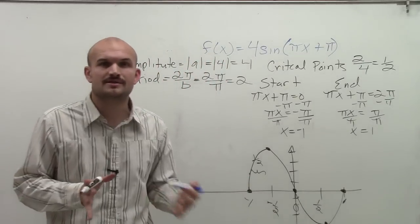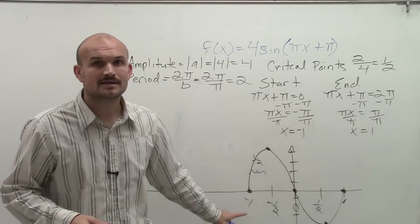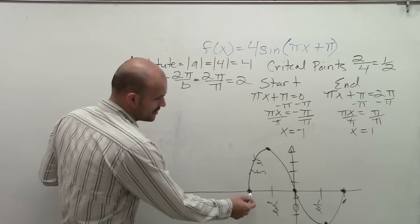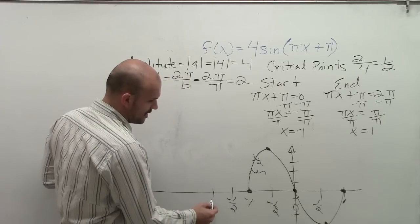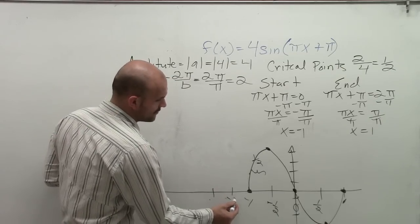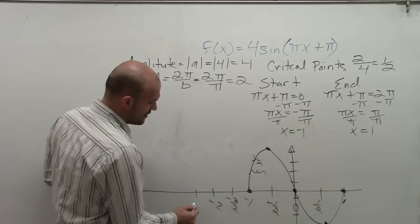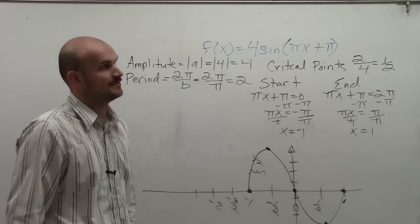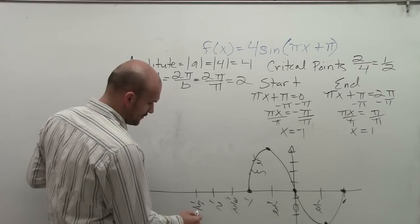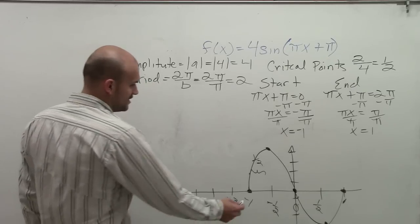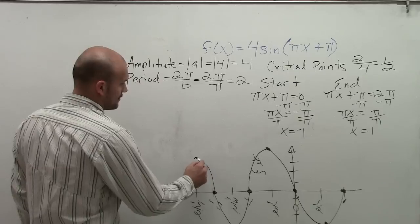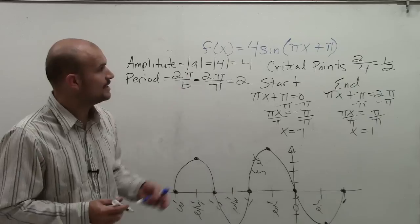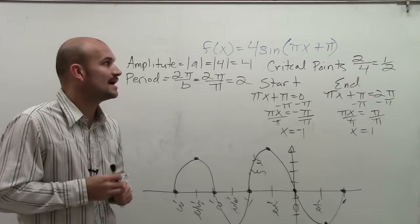That's one period of our graph, but we want to graph two periods. These graphs continue in infinite length, so we continue them in both the positive and negative direction. Going left, the next points are negative three over 2, negative 2, and negative 5 over 2. So the graph continues down to its next critical point, comes back up, up to the max, and finishes at negative 3. And that's how you graph two periods of our function 4 times sine of pi x plus pi.